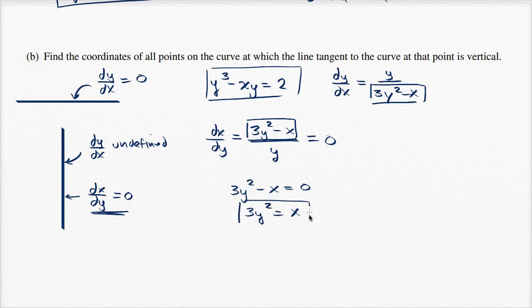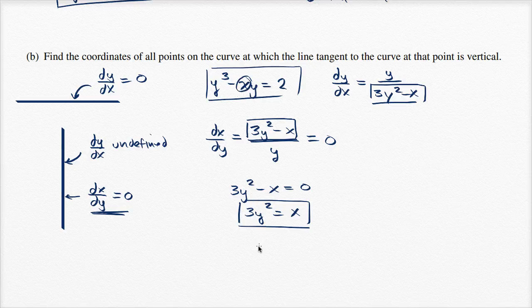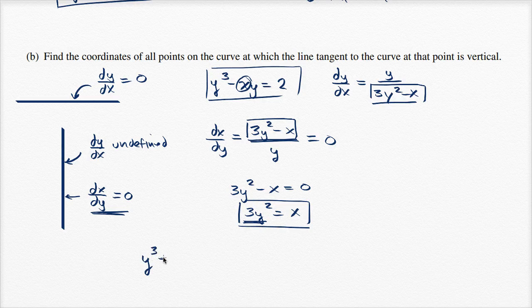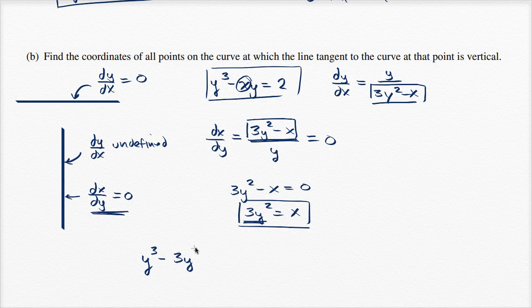So let's use both of these constraints to solve for x and y. The easiest thing to do is substitute x with 3y². So if we take our original equation of the curve, we get y³ - (3y²)(y) = 2.